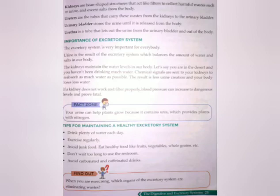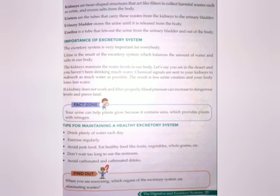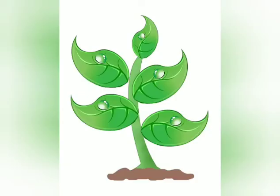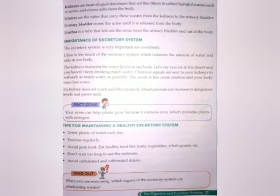For maintaining a healthy excretory system, you should drink plenty of water every day, exercise regularly, eat healthy food, and don't wait too long to use the restroom. Did you know urine can help plants to grow? Urine contains urea which provides plants with nitrogen to make protein, and we know protein helps in growth and repair.